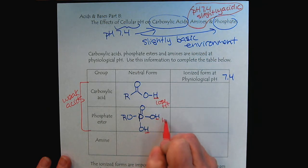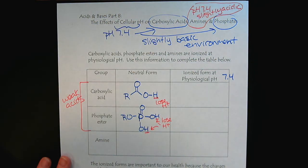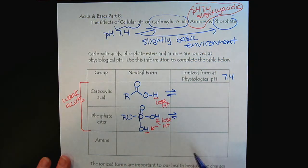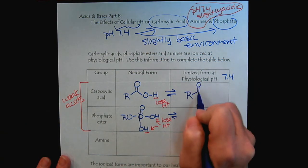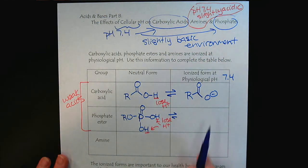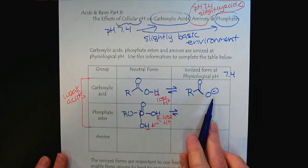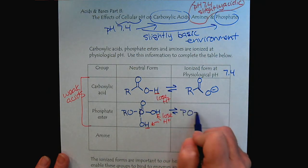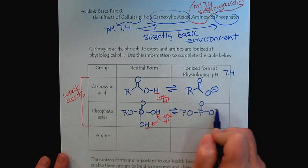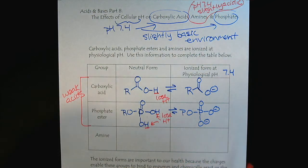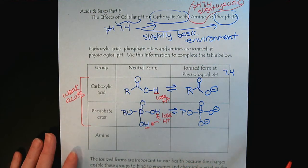They lose H+ here and here. But remember that they're weak, so it's always at equilibrium. The convention, when we look at molecules in a biochemical context, is when we see a carboxylic acid, we'll see it drawn as the carboxylate. And when we have a phosphate ester, we'll see it drawn as the organic phosphate. This is how you'll see them when they're drawn at physiological pH.